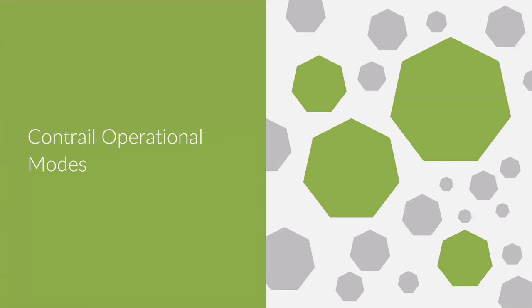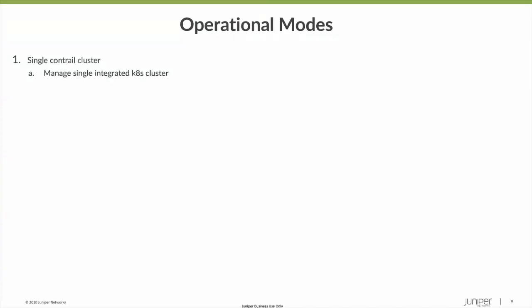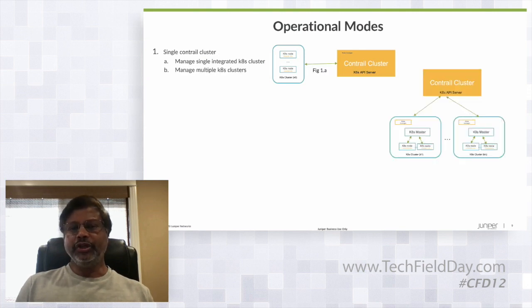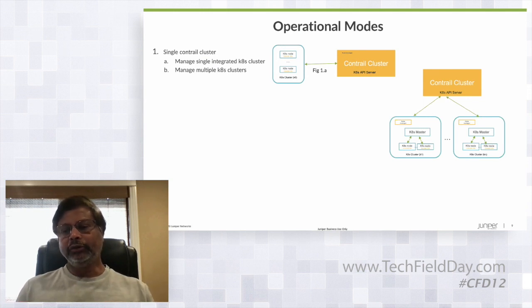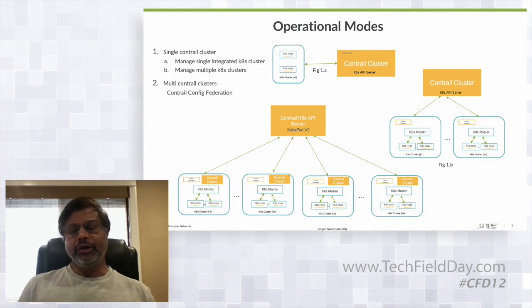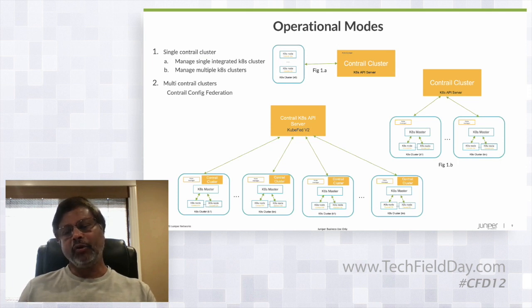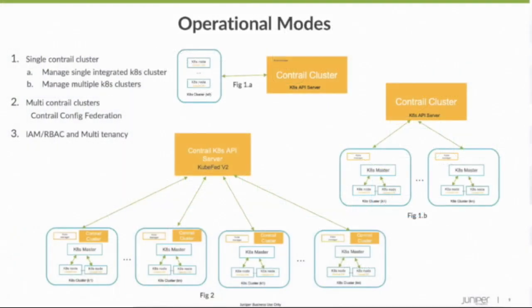I'd like to walk through a few operational models Contrail works on. One mode is a single cluster integrated with the Kubernetes cluster. The second mode is a Contrail cluster managing multiple Kubernetes clusters. The third mode, which we are going to support, is multiple Contrail clusters managed through KubeFed or another Contrail controller. KubeFed is used for Config Federation and is part of the Kubernetes ecosystem. We also support Networking Federation — my colleague will walk through how that works. We also support IAM, RBAC, and multi-tenancy.